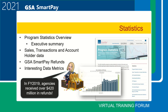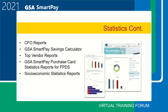Interesting data metrics are updated regularly and include statistical information such as travel spend by city, decreases in convenience checks each year, and the increase in chip card usage over time. GSA also provides current and historical delinquency metrics for CFO Act agencies. Top vendor reports include top airline, rental car, and hotel vendors. The GSA SmartPay purchase card statistics report is posted as required by FAR 4.606, and the socioeconomic statistics report provides government-wide spend for categories such as women-owned and veteran-owned small businesses.